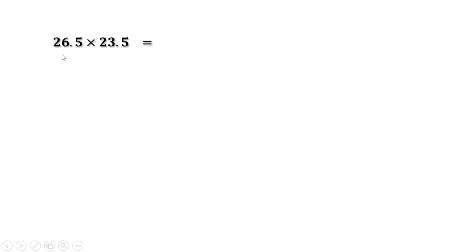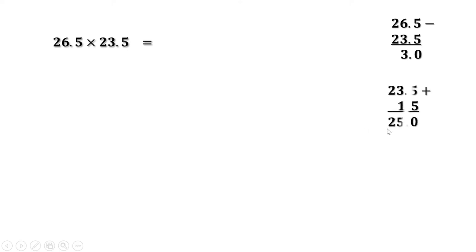If you don't know what that number is, we can find it from the difference: 26.5 minus 23.5 is 3, and half of that is 1.5. If we add 1.5 to the smaller number, we get the middle number: 23.5 + 1.5 = 25. Again, if we subtract 1.5 from 26.5, we also get 25. That means 26.5 is 1.5 more than 25 and 23.5 is 1.5 less than 25.